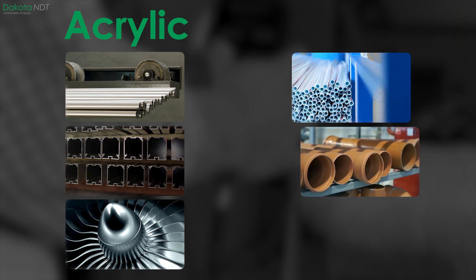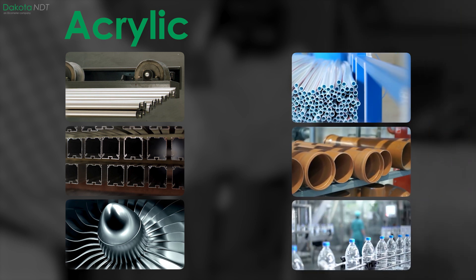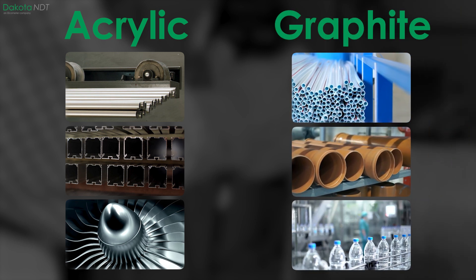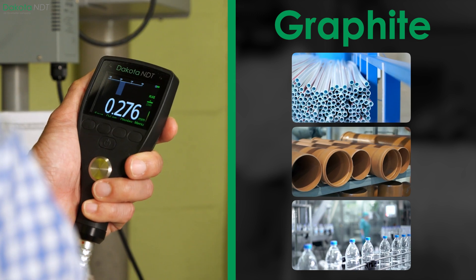While thin plastics and other similar materials should be measured using a graphite delay line with the gauge set to plastic mode.